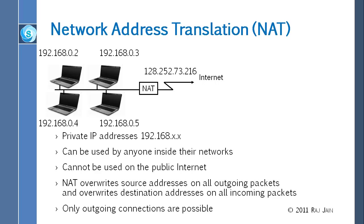If two computers both send packets with source port 80, NAT assigns each a different translated port number — say 3081 for one and 3082 for the other — and records these in the table. When a response comes back to port 3081, NAT knows exactly which internal computer and port it belongs to. This allows NAT to track all simultaneous sessions correctly.